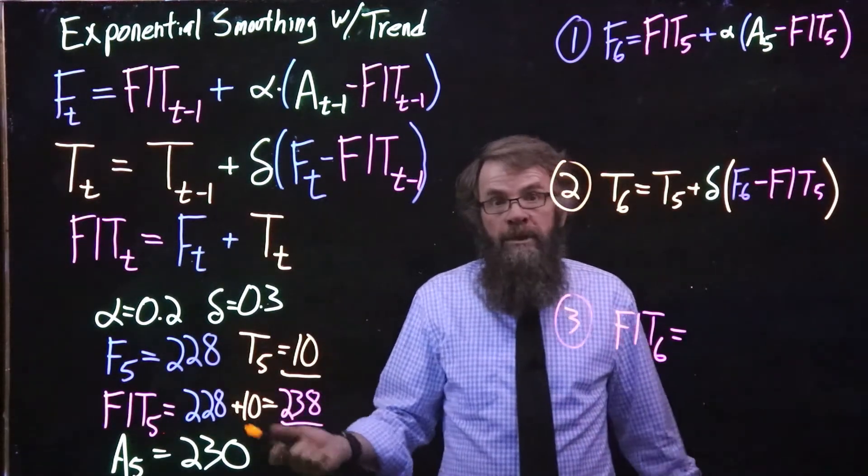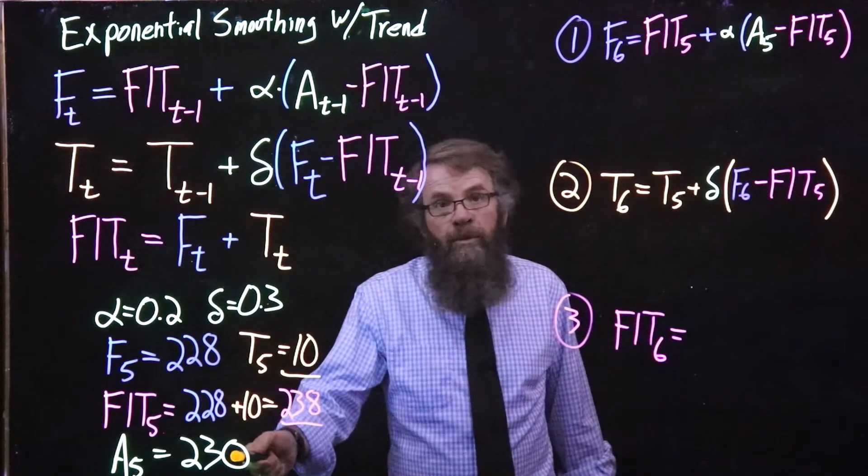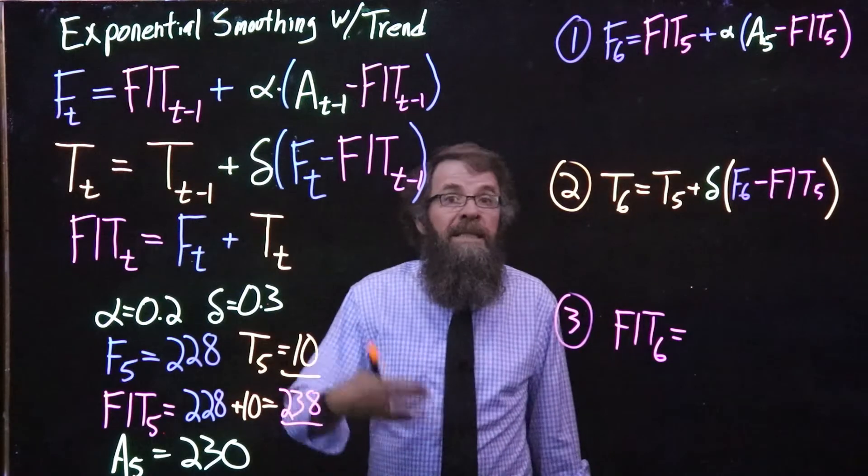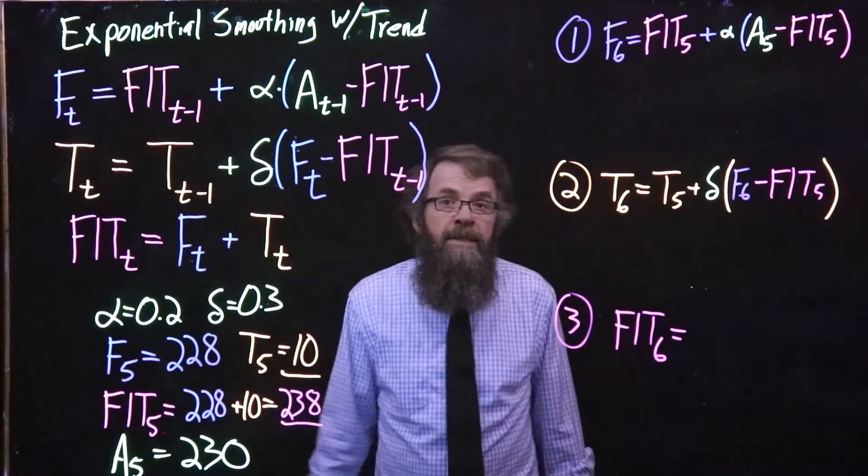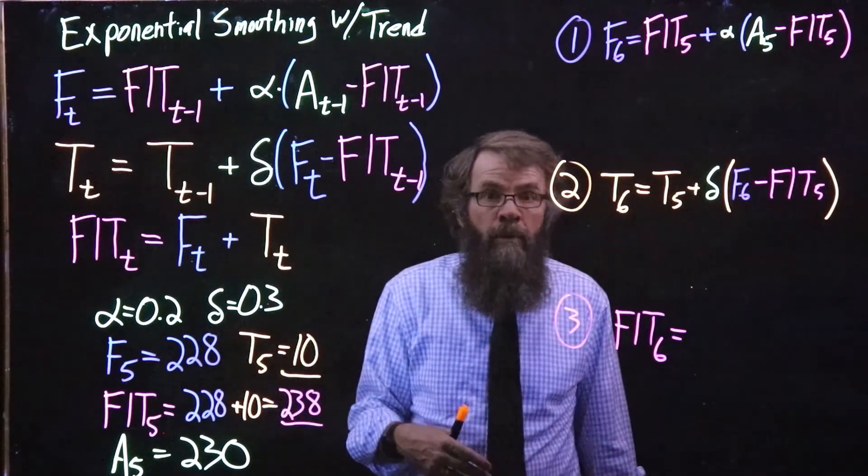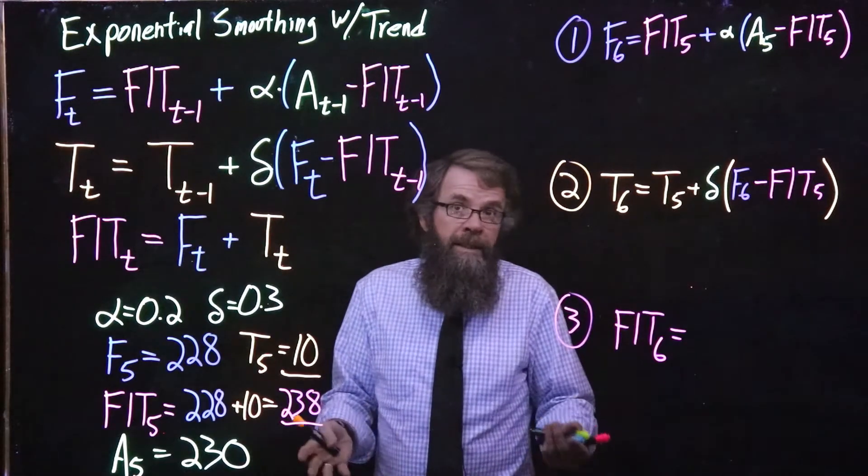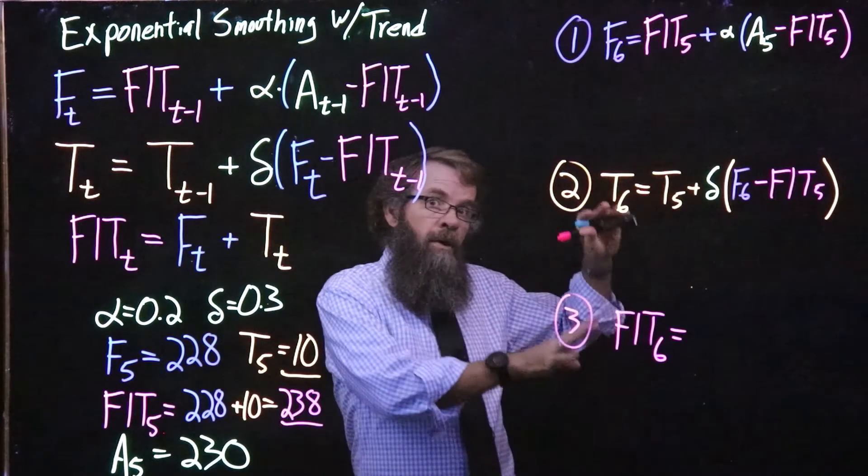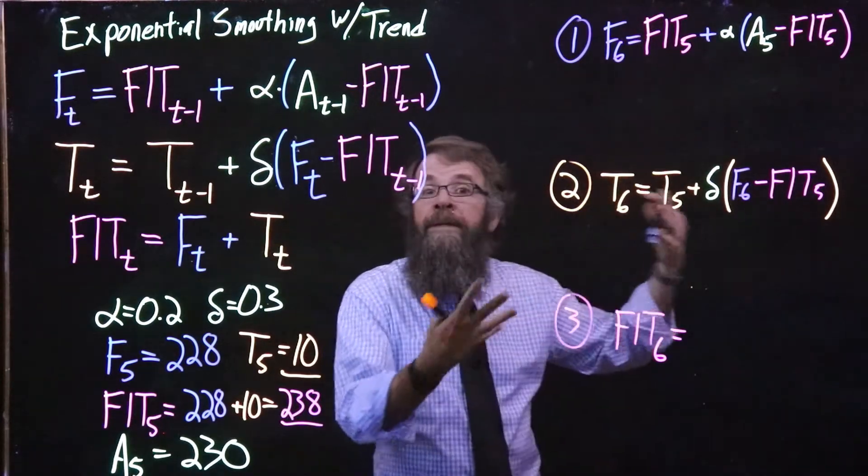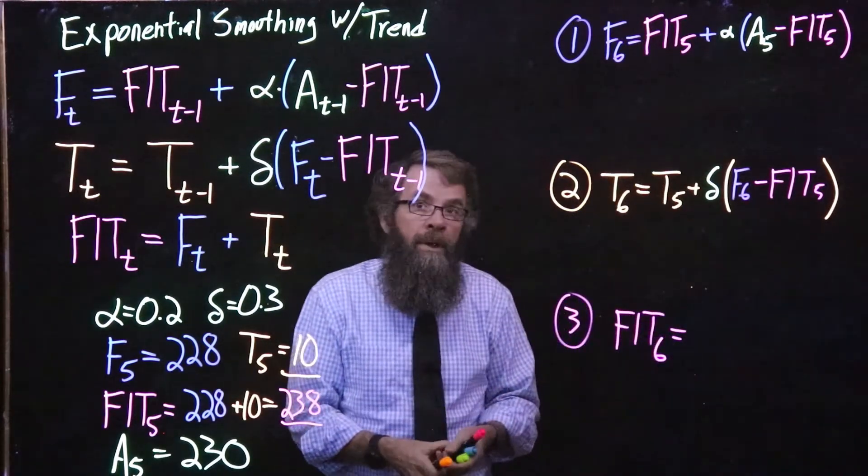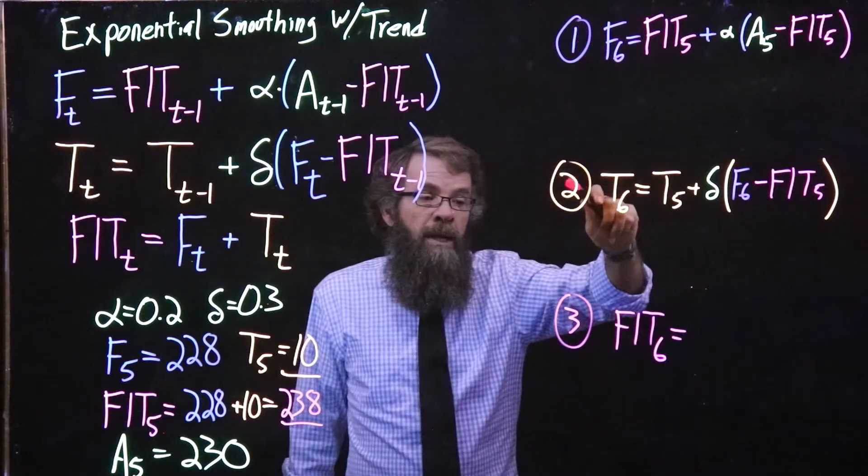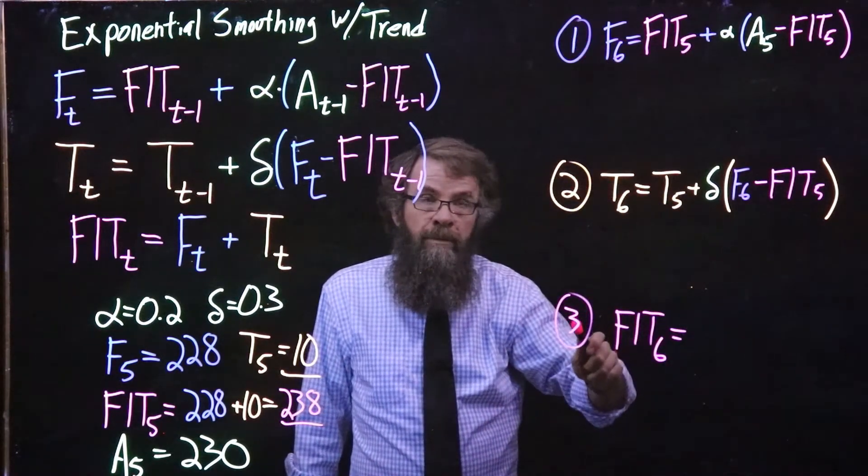Now unfortunately for us, the actual demand in the most recent period was 230, so demand was less than we expected. What you might expect is that since the actual was less than we predicted, it's going to drive our estimate of the trend to be a little bit lower, and that's exactly what we're going to see happen. So we have three steps: the level, the trend, and then the forecast including the trend for the next period.